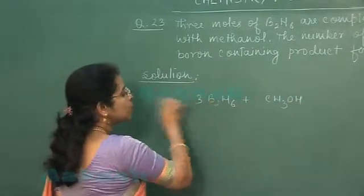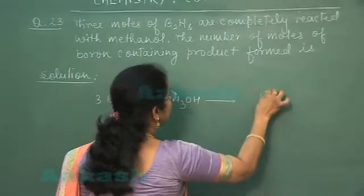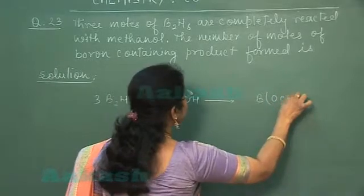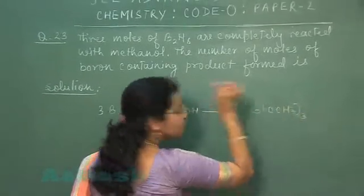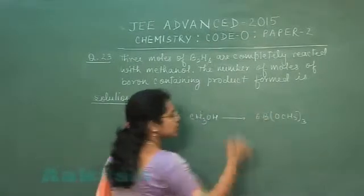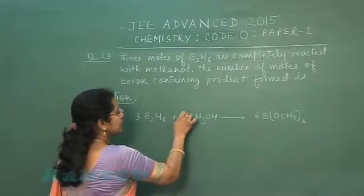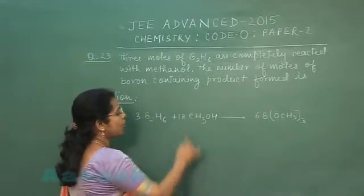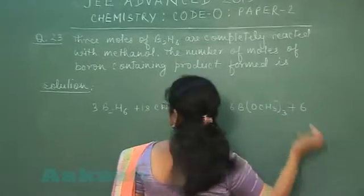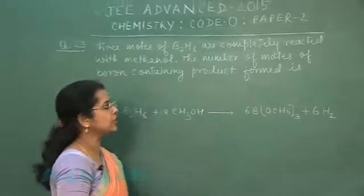3 moles B2H6 reacts with methyl alcohol. Reaction का product बनता है B(OCH3)3. Since 3 moles is present तो हमने coefficient यहां लिख दिया 6 moles of this compound. This is 18 moles of methyl alcohol plus reaction product बन रहा है 6 mole hydrogen gas.